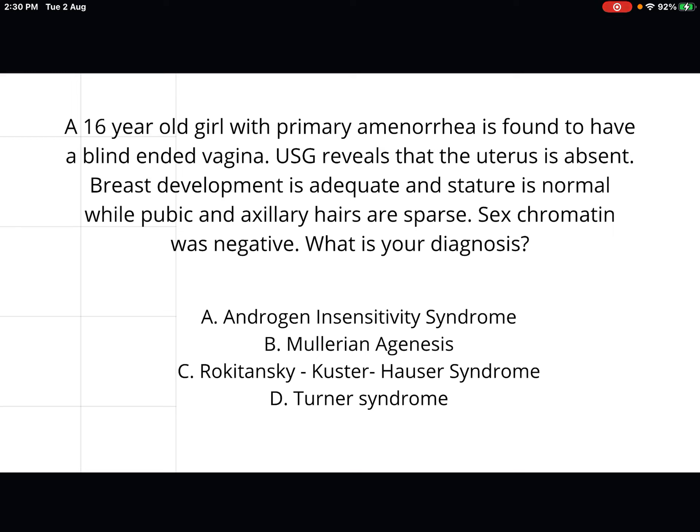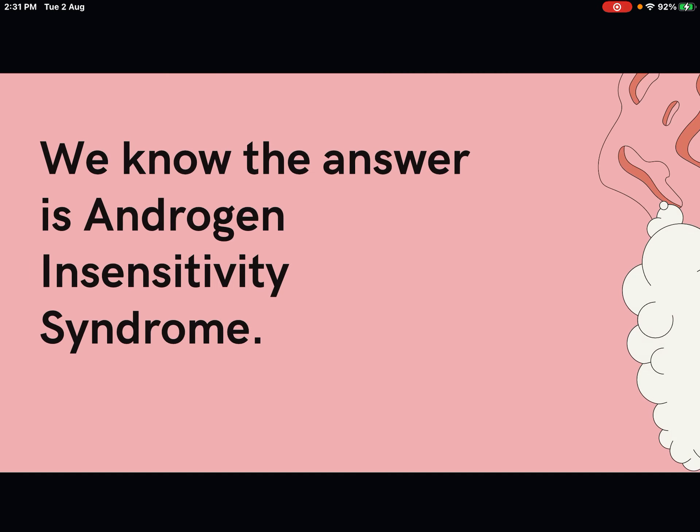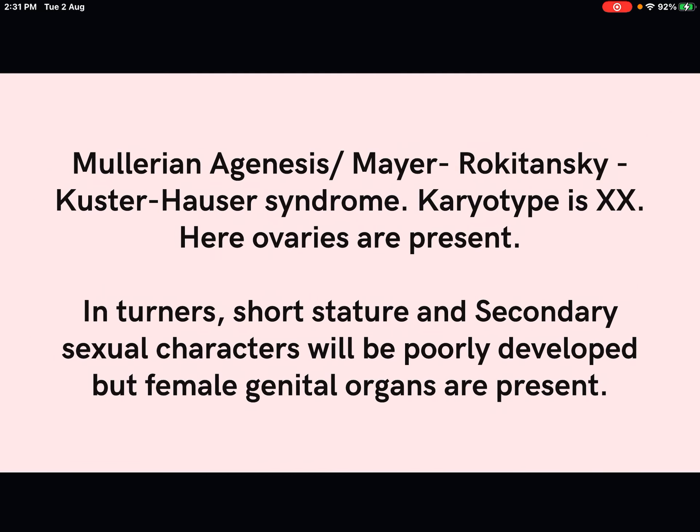The key words to identify from this question are: primary amenorrhea, blind-ended vagina, absent uterus, normal breast development, normal stature, and most importantly, sex chromatin negative. You can rule out Müllerian agenesis and Rokitansky-Küster-Hauser syndrome, and Turner syndrome can be ruled out because stature is normal — Turner syndrome typically presents with short stature.